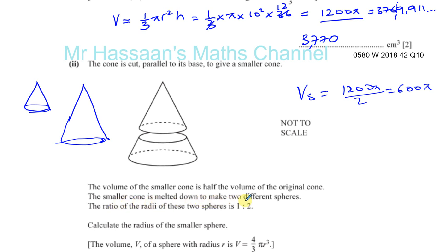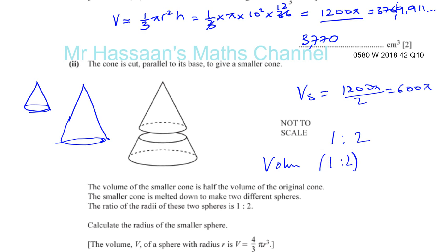The smaller cone is melted to make two spheres with radii in the ratio 1 to 2. Since the radius is a length, the ratio of the volumes of the two spheres is the cube of the ratio of their radii: 1³ to 2³ = 1 to 8.